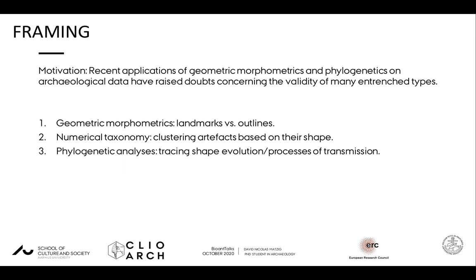In the final Paleolithic of Europe and the Paleo-Indian period of North America, most such archaeological cultures are defined on the basis of artifact typology, most commonly concerning projectile points, but recent applications of computer-aided methods such as geometric morphometrics and phylogenetics have raised doubts as to the validity of many such entrenched groupings. I present the preliminary results of a comparative exploration conducted wholly in R, where we recreated several landmark-based GMM studies using outline data to assess the appropriateness of the outline-based approach, tested the ability of outline data to cluster artifacts into meaningful groups based on shape alone, and checked whether outline data is appropriate to detect processes of cultural evolution.